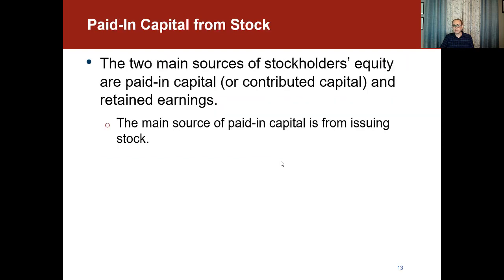Related to the issuance of stock is what we refer to as paid-in capital. The two main sources of stockholders' equity are paid-in capital, also called contributed capital, and retained earnings. The original contribution of shareholders when the corporation is initially created is the contributed capital or paid-in capital. Any profits or net income the company decides to retain in the business is retained earnings. The main source of paid-in capital is from issuing stock, which we'll discuss in more detail in the coming video.